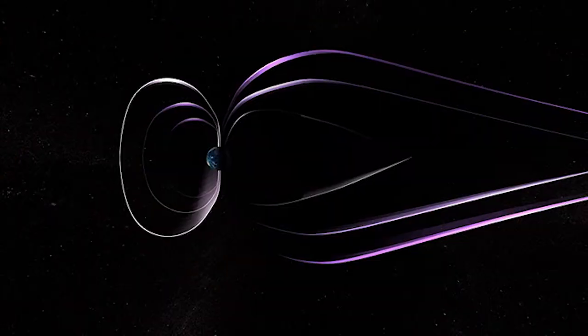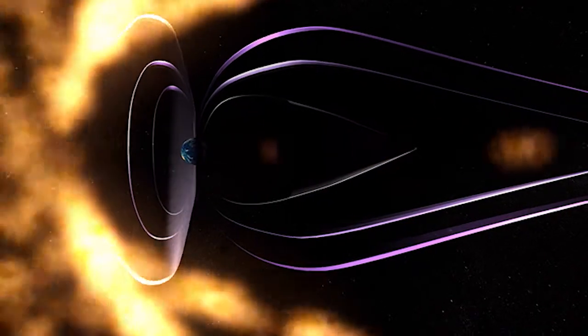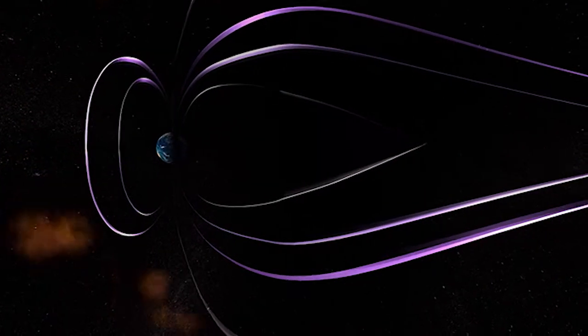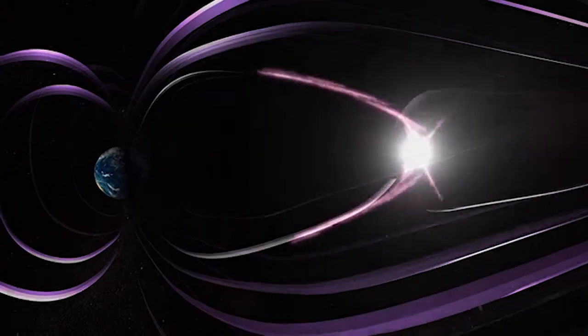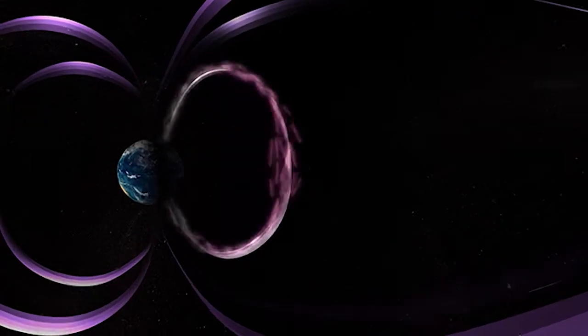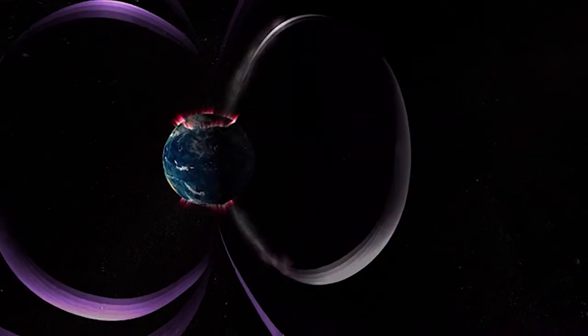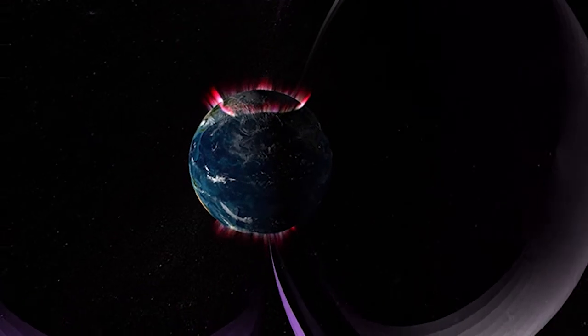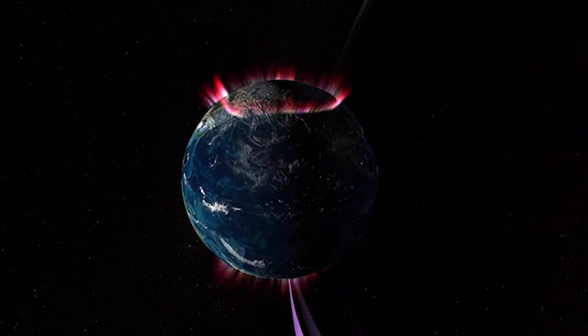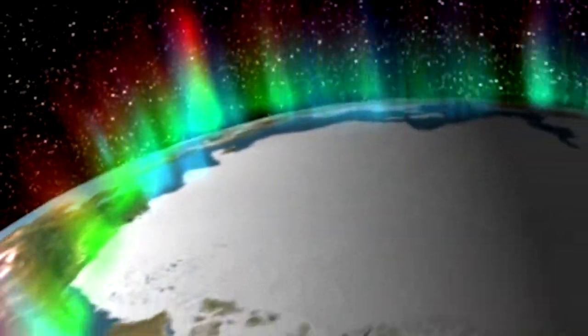Natural aurora are produced by the solar wind, a constant stream of charged gas that brushes past the Earth. The Earth is like a gigantic magnet which traps some of the charged particles. As the particles are captured by Earth's magnetic field, they collide with atoms and molecules in the upper atmosphere causing the particles to glow, producing colored lights in shades of red, green, and blue.